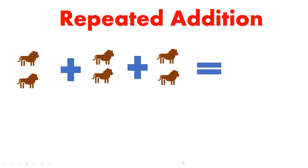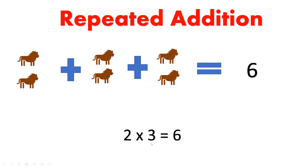This is a repeated addition sentence. Let's add all of our lions together: one, two, three, four, five, six. We have six lions. I'm adding two lions three times, so my multiplication sentence is two times three equals six. Our answers are the same, but how we solved it is different — on top we used addition and on the bottom we're using multiplication.